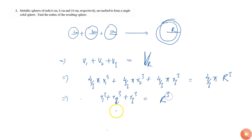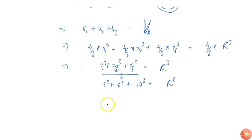So r1 cubed: this whole thing will become 6 cubed plus 8 cubed plus 10 cubed equals R cubed. If I write this down, 6 cubed is 36 times 6, which is 216, plus 8 cubed is 64 times 8, which is 512, plus 1000 equals R cubed.